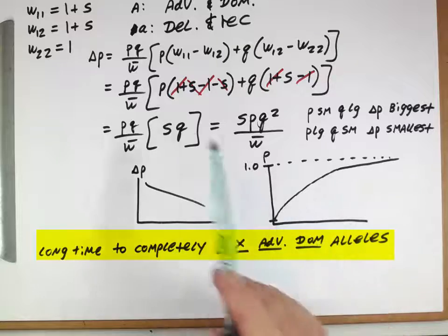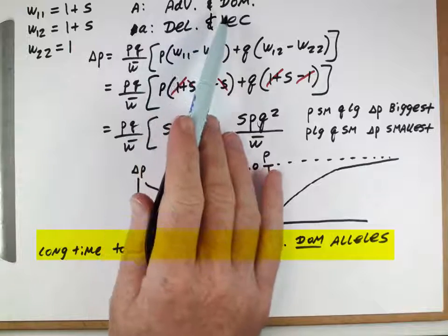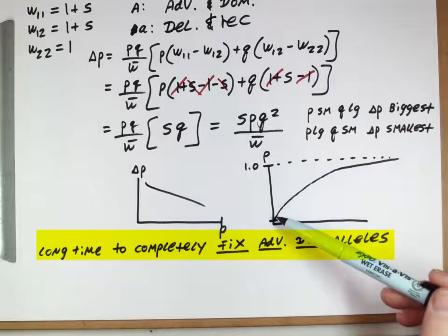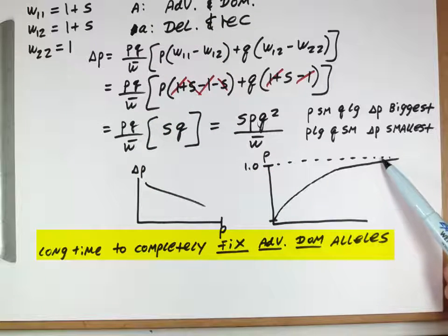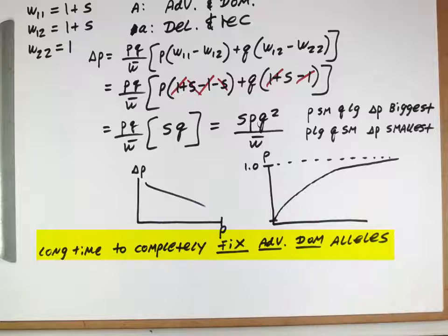And so, if we have a capital A allele, even if it's advantageous and even if it's dominant, it actually takes a really, really long time to kind of finish off this very last little bit of frequency here. And this long time to completely fix advantageous dominant alleles,